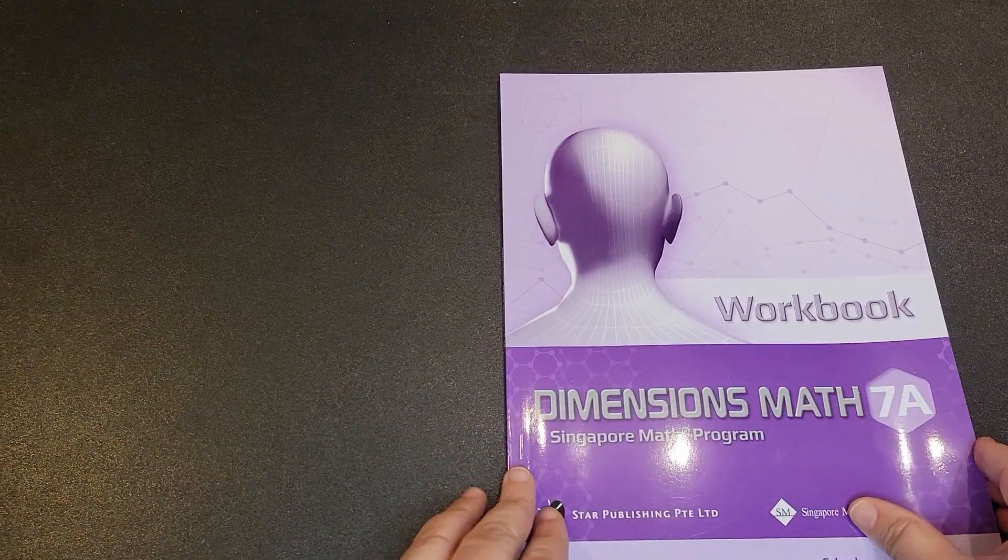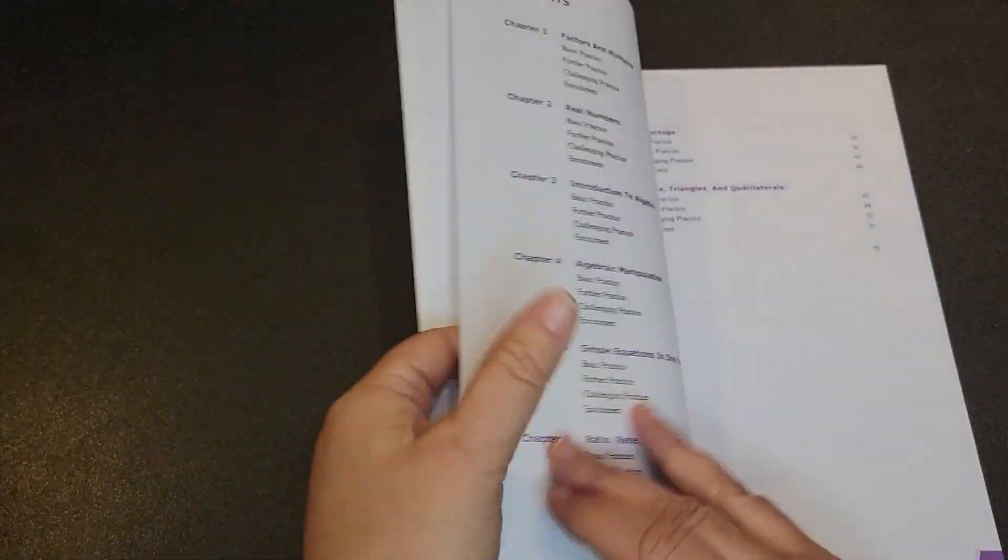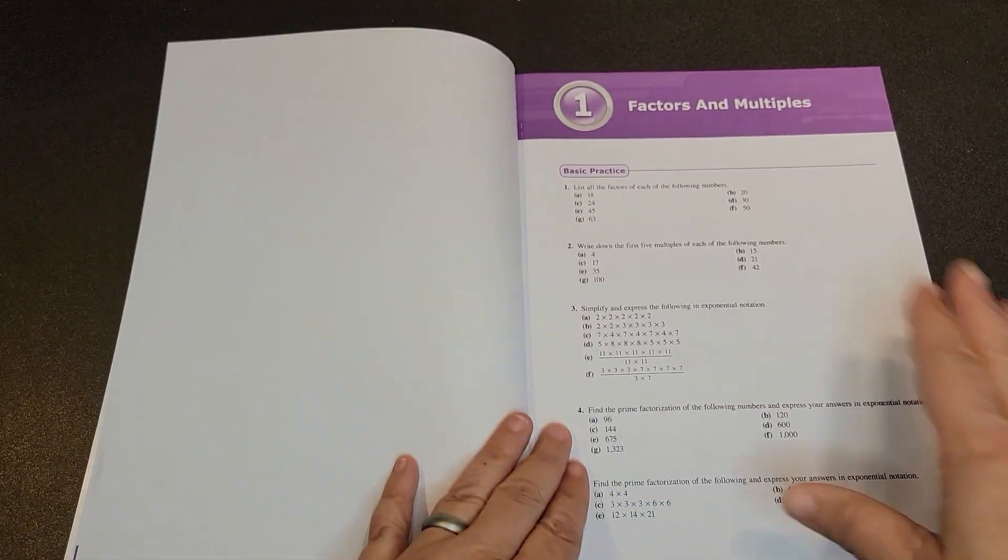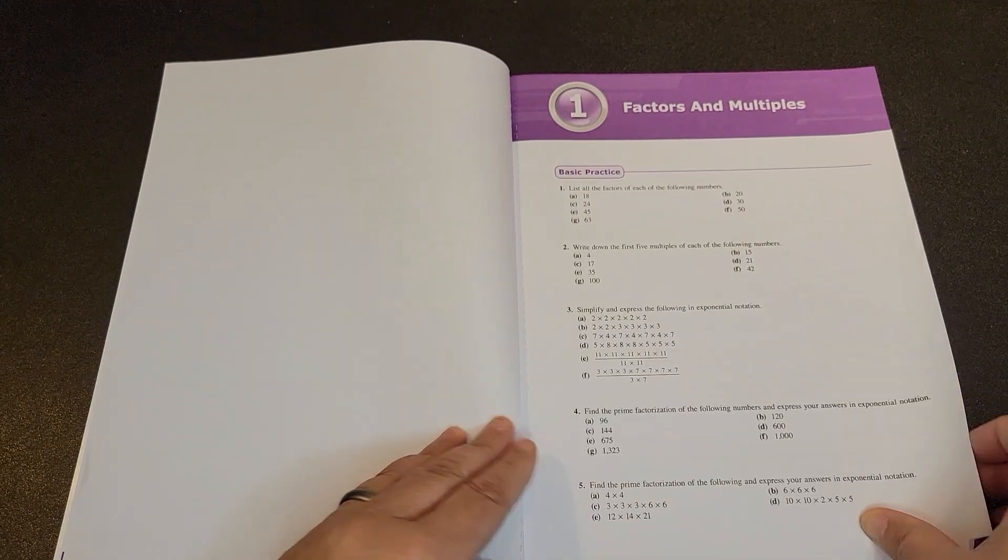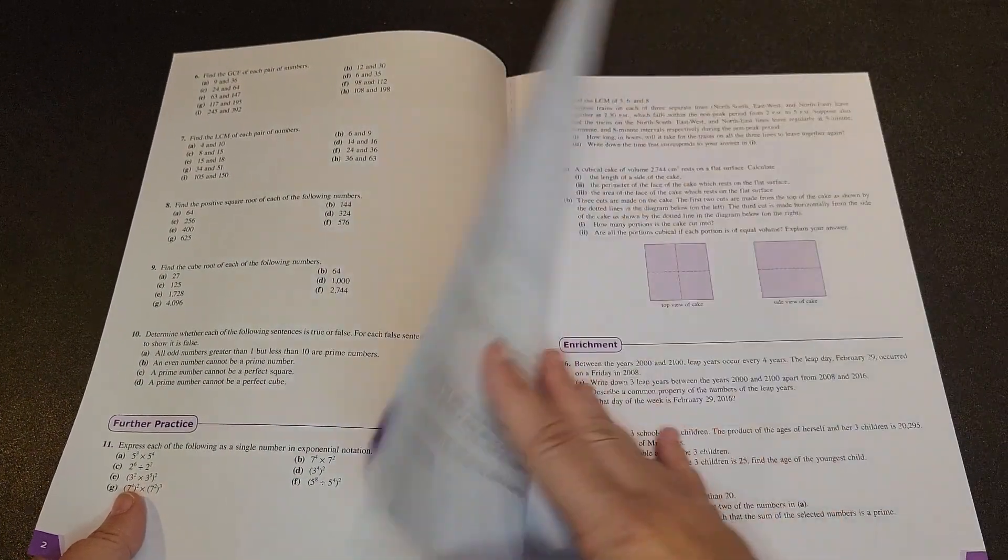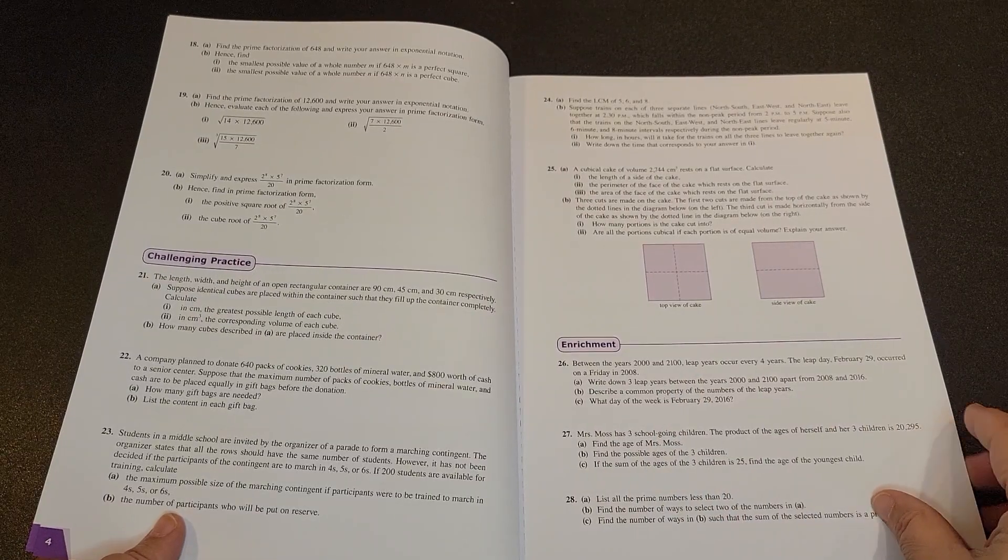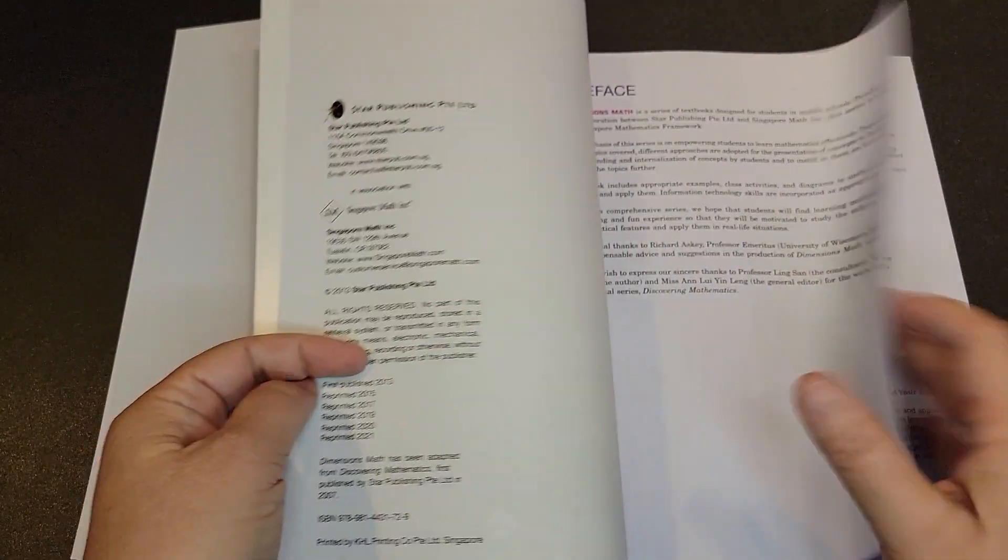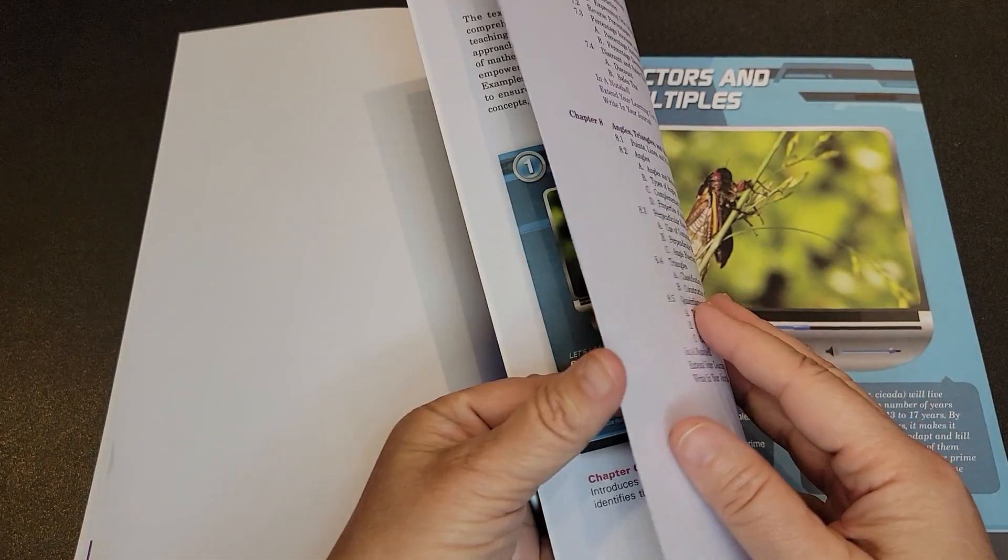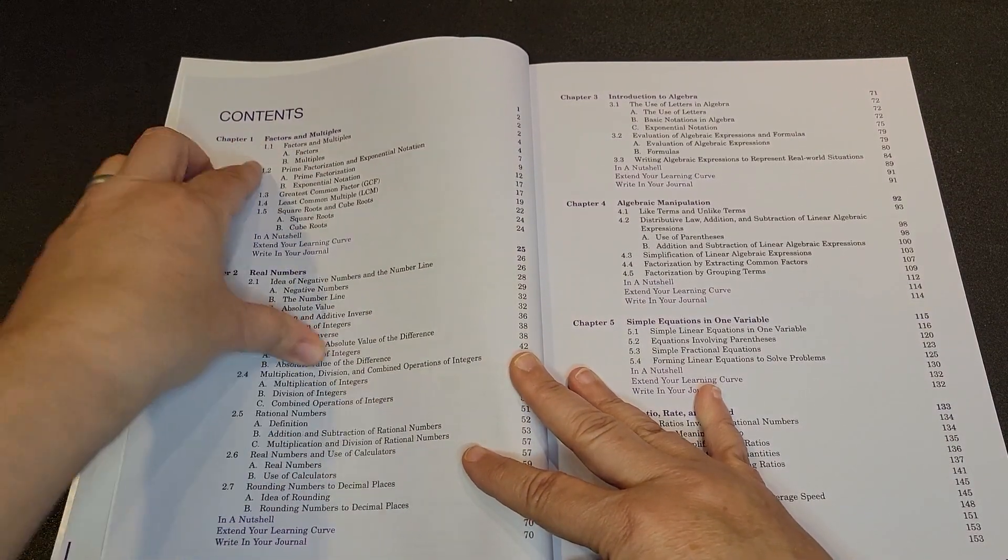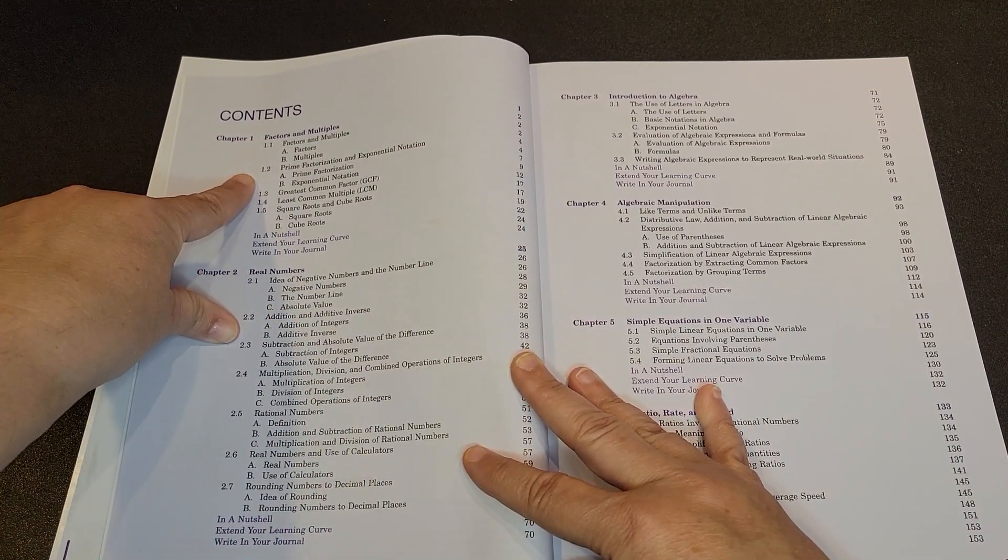So let's look at the workbook. For your workbook, this does have something that's different than what you would have seen before. This is chapter one for your workbook. This is perforated, and it's not broken down by the sub-chapters. And what I mean by that is if you look at what your scope and sequence is for 7A, you can see that you have your chapter one, and then you have these sub-sections.